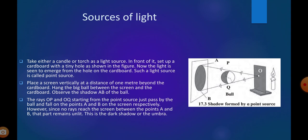Place a screen vertically at a distance of 1 meter beyond the cardboard. Hang a big ball between the screen and the cardboard. Observe the shadow AB of the ball. The rays OP and OQ starting from the point source just pass by the ball and fall on the points A and B on the screen respectively. However, since no rays reach the screen between the points A and B, that part remains unlit. This is the dark shadow or the umbra.